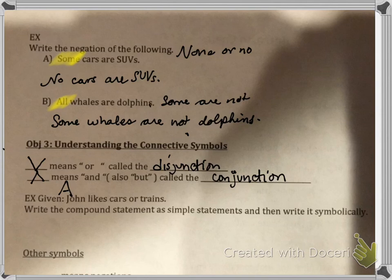Let's look at an example: 'John likes cars or trains.' Write the compound statement as simple statements and then write it symbolically. We usually use P's and Q's to write out simple statements. So the first one I'm going to write out: John likes...